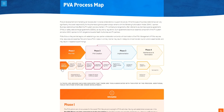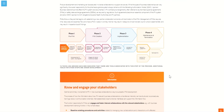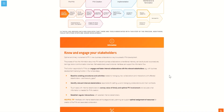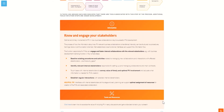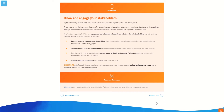Click on the Know and Engage Stakeholders step under Phase 1. You can see that clicking this step opened new information below. Scrolling down a little under the information bar, further details and helpful tips are provided to the user. Below this, you find the Tools and Resources bar, which will list hyperlinks to tools or other links to the solution web pages where available.